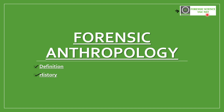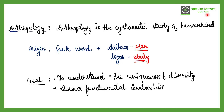We'll make a series of videos on forensic anthropology, but first we need to see its definition and history. Before knowing forensic anthropology, we need to know what anthropology is. Anthropology is the systematic study of humankind — how humans evolved — studied with respect to different aspects.